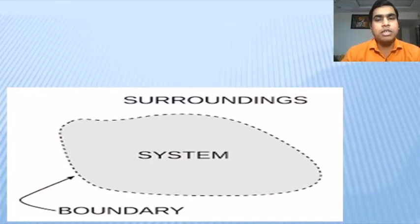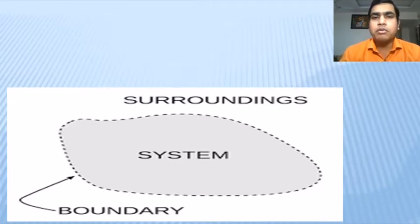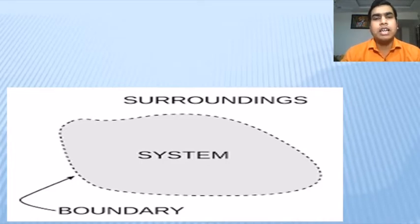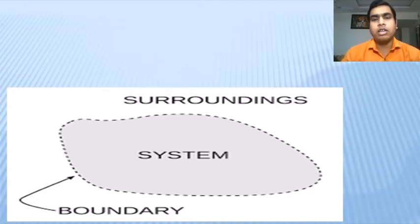A system is defined as the part of the universe which is under investigation, or the part of the universe which is under study, is called a system. The outside area, outside the boundary of the system, the area which is adjacent to the system, is called surroundings. And system plus surroundings as a whole forms the universe.